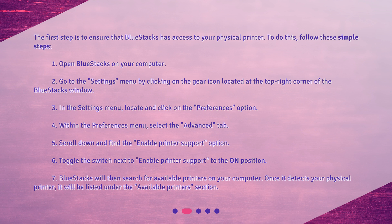3. In the Settings menu, locate and click on the Preferences option. 4. Within the Preferences menu, select the Advanced tab. 5. Scroll down and find the Enable Printer Support option. 6. Toggle the switch next to Enable Printer Support to the On position.